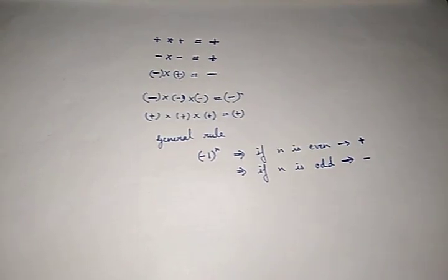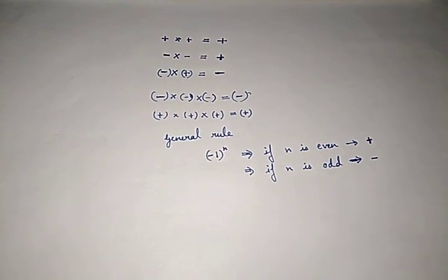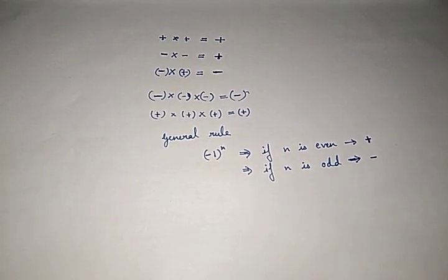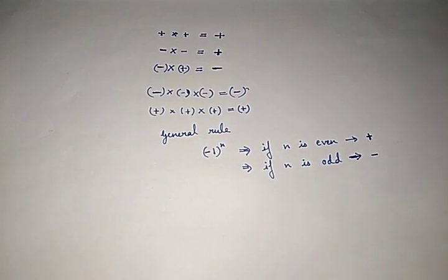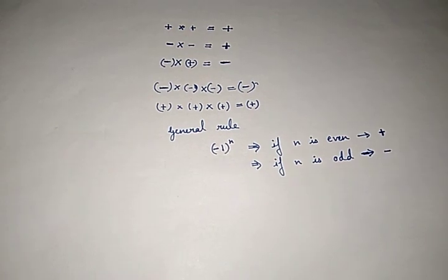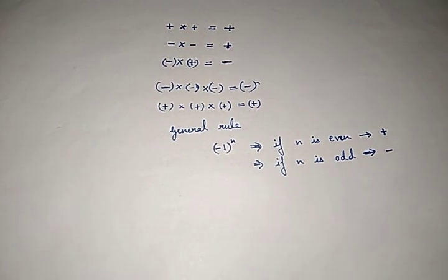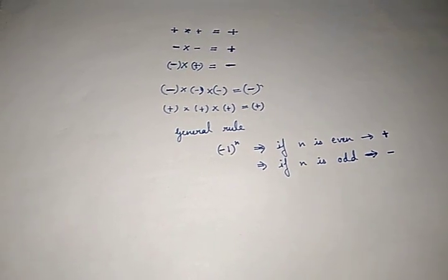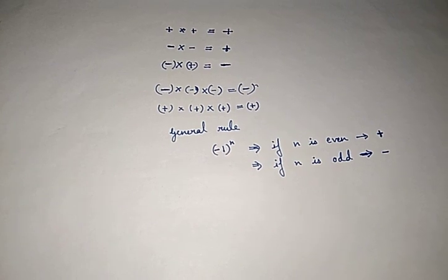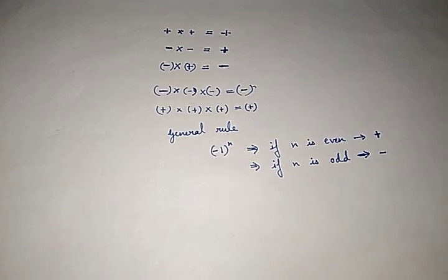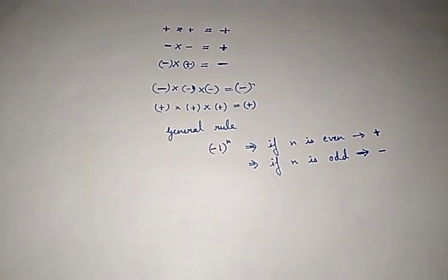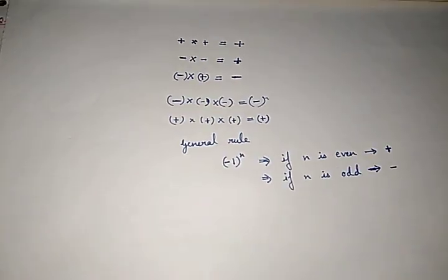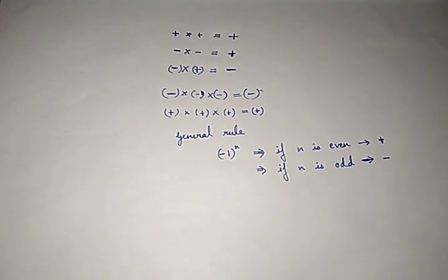Before starting, some rules are there for how to multiply 2, 3, or 4 integers. Just as we have done addition and subtraction, in multiplication also we will take the sign along with the numerical value. Then only we will get the answer.